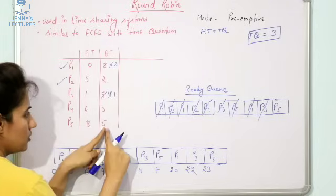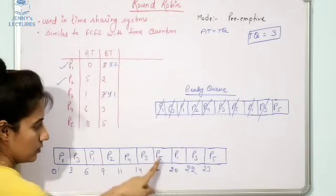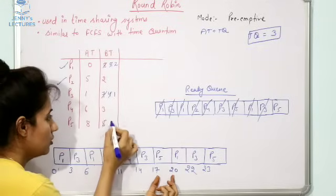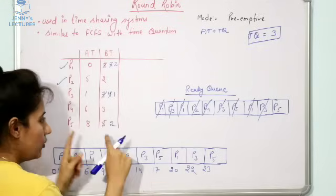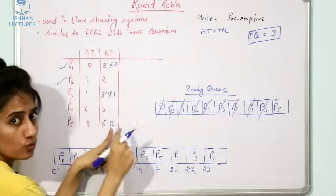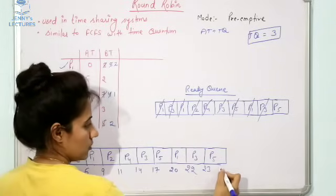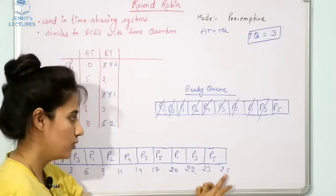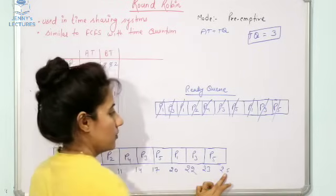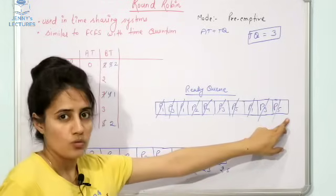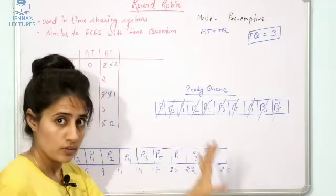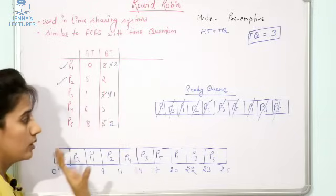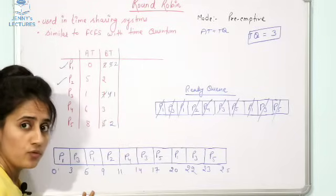Finally, P5 has two units of time remaining — it was previously allocated three units so remaining is two. P5 runs from twenty-three to twenty-five. The ready queue is now empty, so the Round Robin algorithm stops. This completes the Gantt chart.